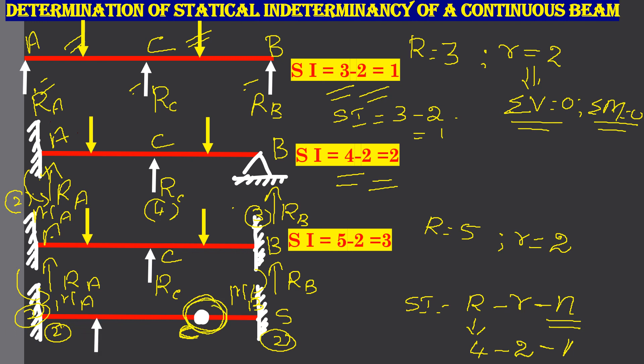You have 2 more supports. Here you have 1 unknown, at this support you will have 1 unknown. So, total unknowns is 6. You will get the statical indeterminacy as 6 minus 2 minus 1, it is equal to 3.